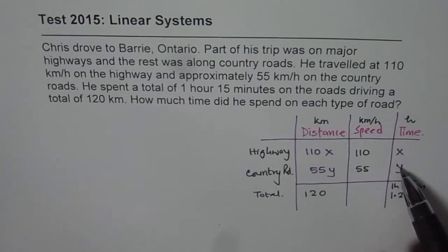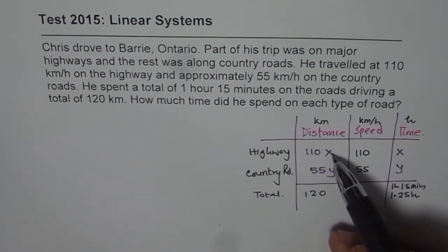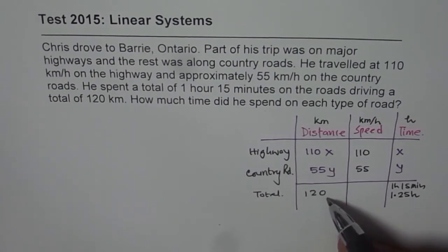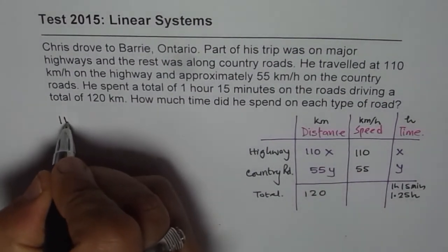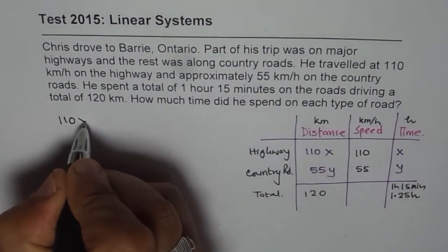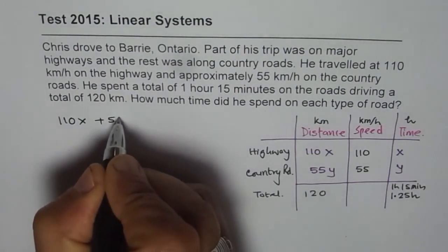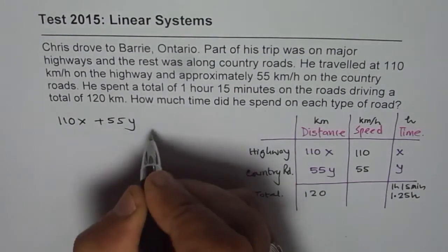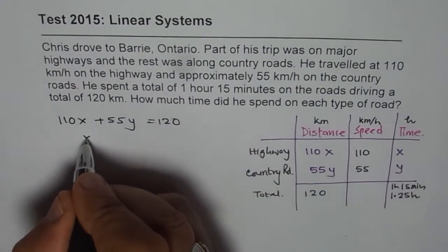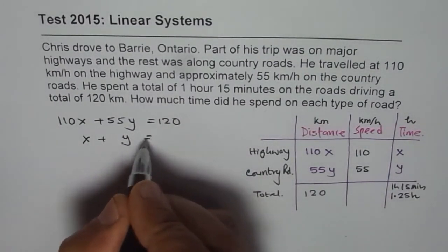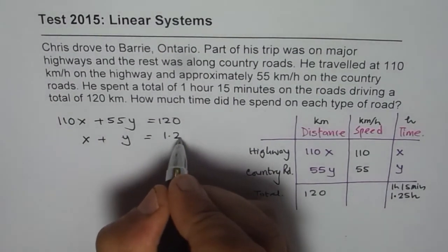The two equations are: x plus y equals 1.25, and 110x plus 55y equals 120. So let me write them down. Equation 1 is 110x plus 55y equals 120, and equation 2 is x plus y equals 1.25.